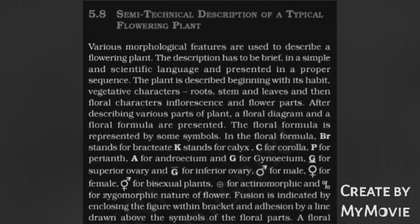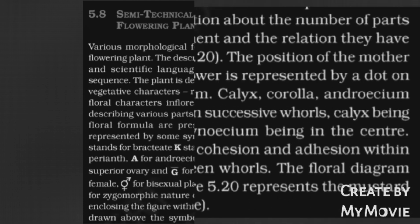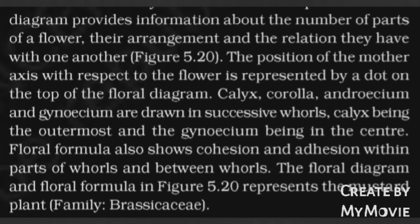A floral diagram provides information about the number of parts of a flower, their arrangement, and the relation they have with one another. The position of the mother axis with respect to the flower is represented by a dot on the top of the floral diagram. Calyx, Corolla, Androecium, and Gynoecium are drawn in successive whorls.